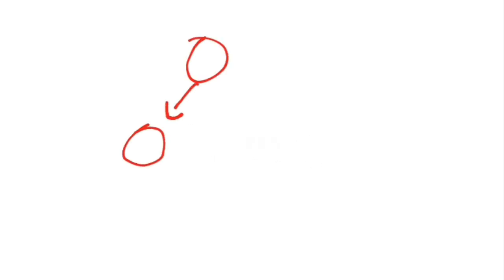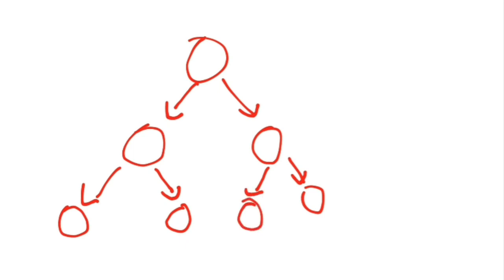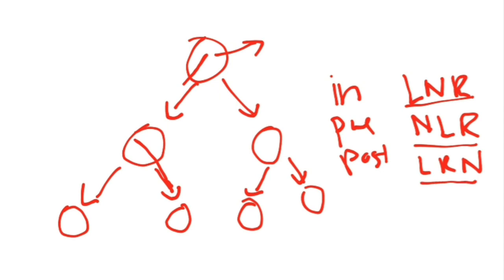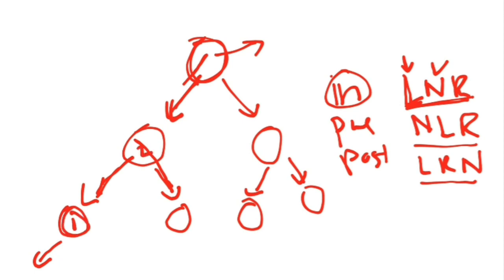The next thing to know is trees. A tree is circles connected in a downward direction, with as many nodes as needed. The topmost node is the root node, from where traversal starts. Traversal means visiting each node. There are three traversal types: in-order (LNR), pre-order (NLR), and post-order (LRN). For in-order, you travel to the leftmost node first, print it, then go right, recursively applying the same process.